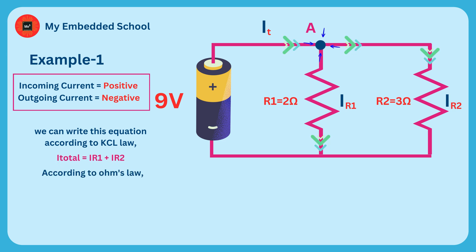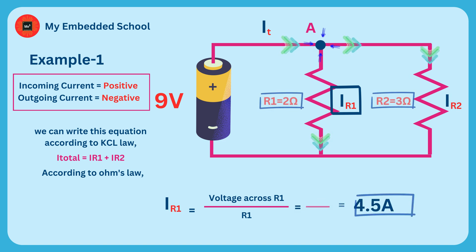According to Ohm's Law, we will find currents that flowing through resistors R1 and R2. Current flowing through resistor R1 is IR1. IR1 is equal to voltage across R1 divided by R1. By using this equation, we find IR1 equals 4.5 amperes from 9 volts divided by 2 ohms from this operation.